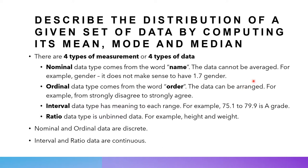Nominal data comes from the word 'name.' Nominal data itself cannot be averaged. For example, gender is a name — you cannot have 1.5 gender, 1.5 males or 1.3 females. That doesn't mean anything. Similarly, if I ask the whole cohort what is your favorite color, I cannot have an average favorite color. That sounds a bit ridiculous.